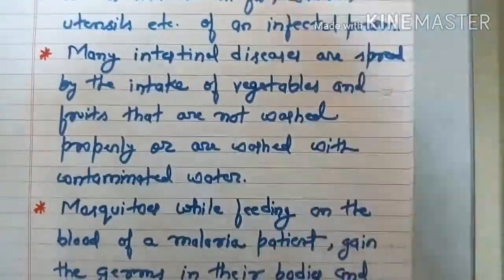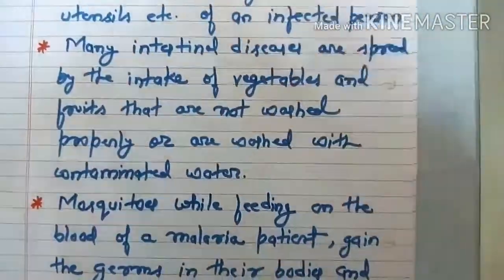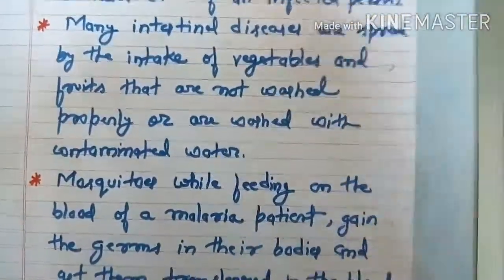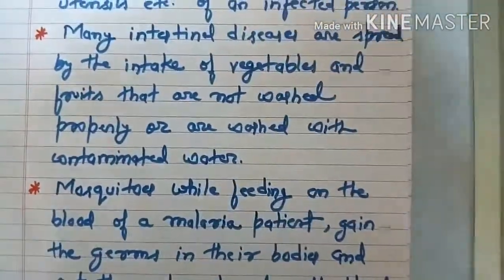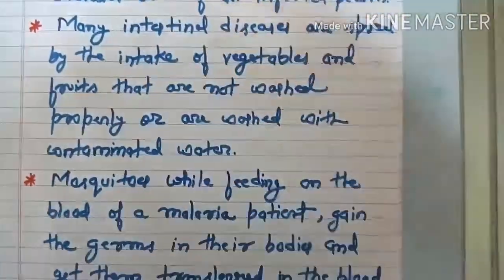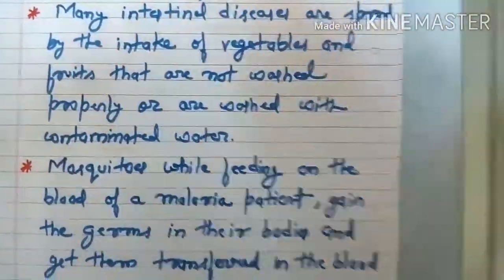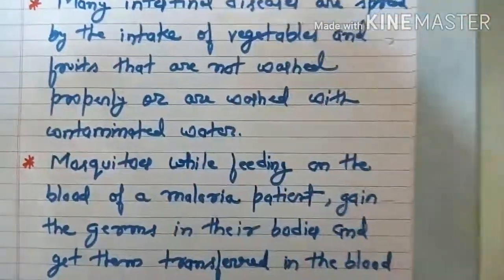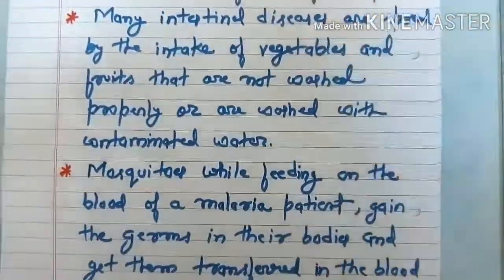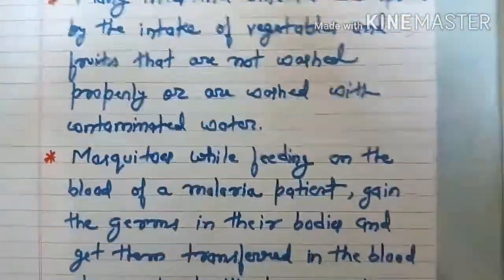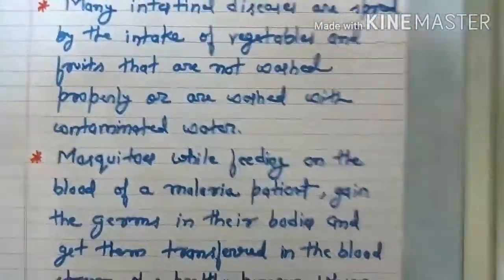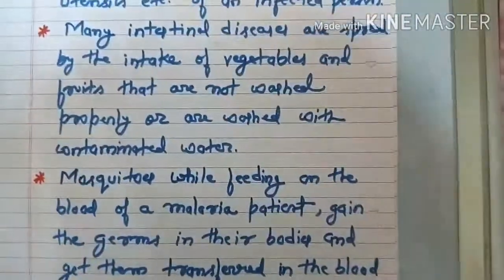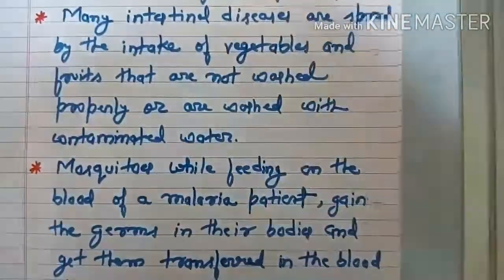Many intestinal diseases are spread by eating vegetables and fruits that are not washed properly or are washed with contaminated water. Diseases like cholera, typhoid, and diarrhea can spread through contaminated food and contaminated water.